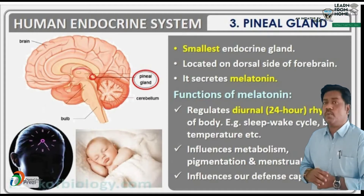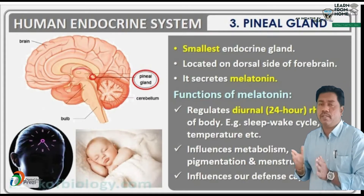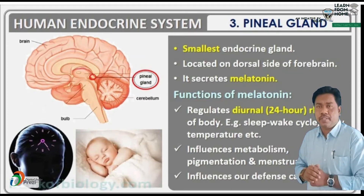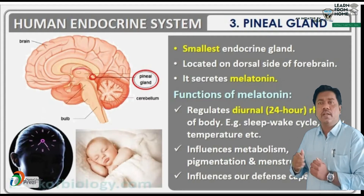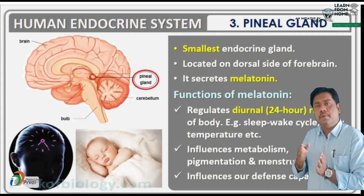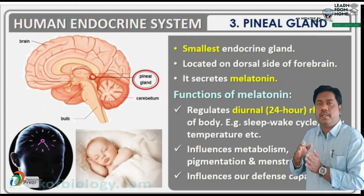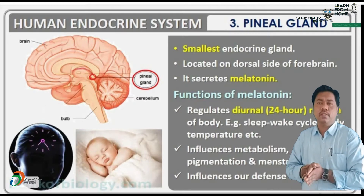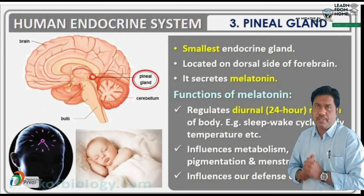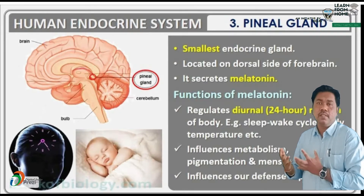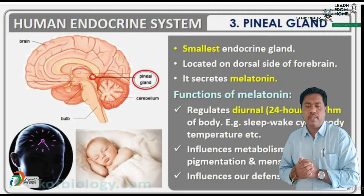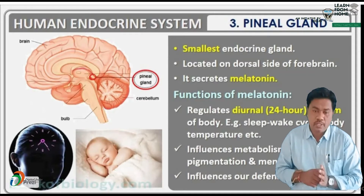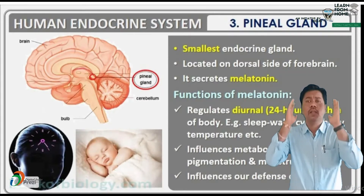Melatonin also influences the menstrual cycle. The menstrual cycle occurs approximately every 28 days in females, during which the endometrium layer of the uterus ruptures and blood is expelled through the vagina. This cycle is present in primates and mammals, and it is regulated by melatonin hormone.